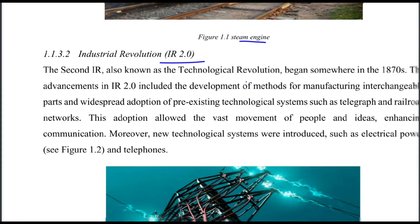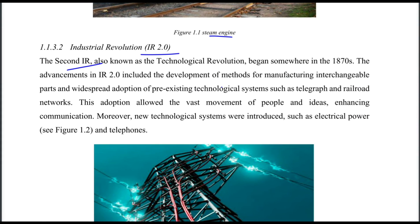The Second Industrial Revolution, also known as the Technological Revolution, began around the 1870s. Advancements included the development of methods for manufacturing interchangeable parts and the widespread adoption of pre-existing technological systems such as the telegraph and railroad network.